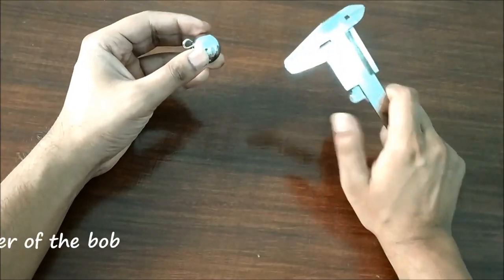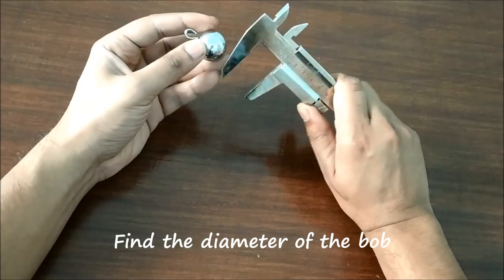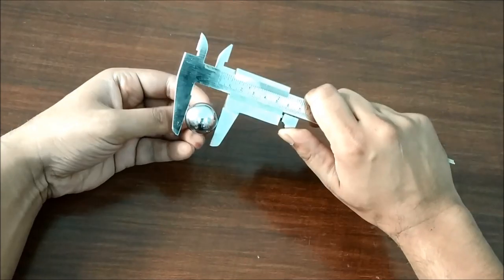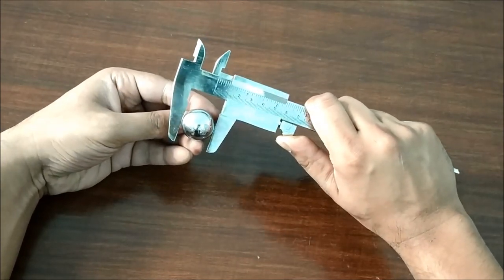First we have to find the diameter of the spherical bob. Check for the zero reading of the vernier caliper.